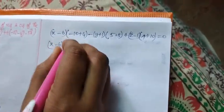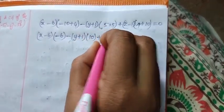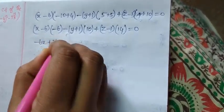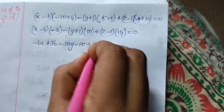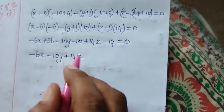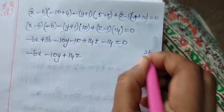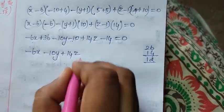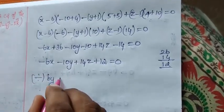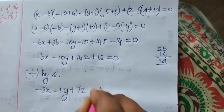So: (x − 6) into −6, minus (y + 1) into 10, plus (z − 1) into 14 equals 0. Expanding inside: −6x + 36 − 10y − 10 + 14z − 14 = 0, giving −6x − 10y + 14z + 12 = 0. Dividing throughout by 2: −3x − 5y + 7z + 6 = 0.